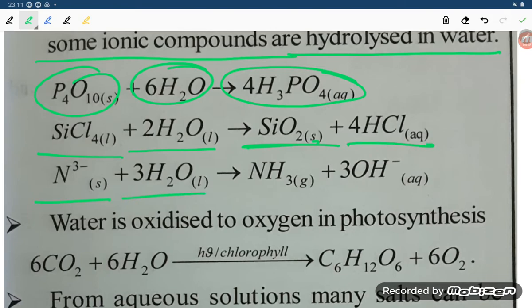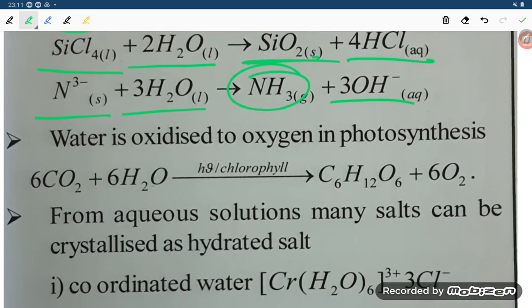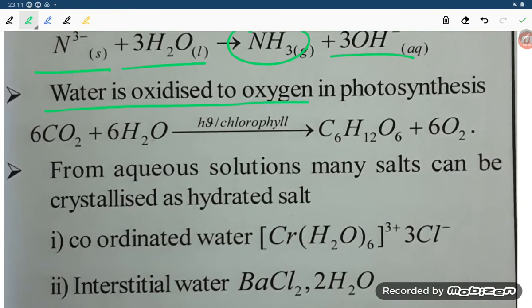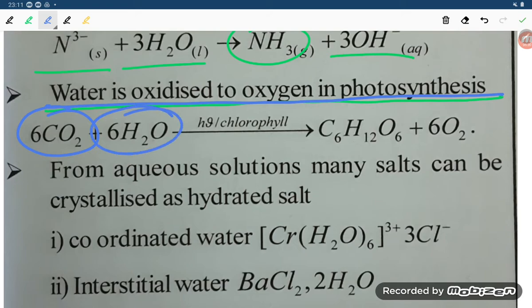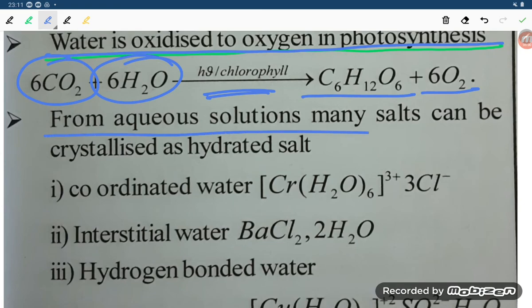Water is oxidized to oxygen in photosynthesis. Six mole of CO2 plus six mole of water gives C6H12O6, that is glucose, plus 6O2. From aqueous solution, many salts can be crystallized as hydrated salts.